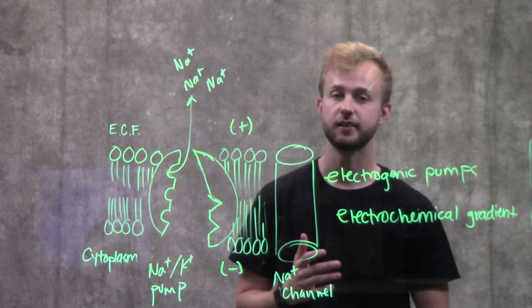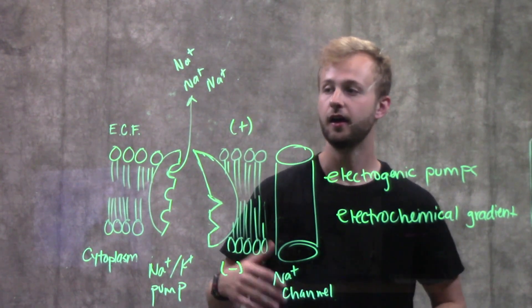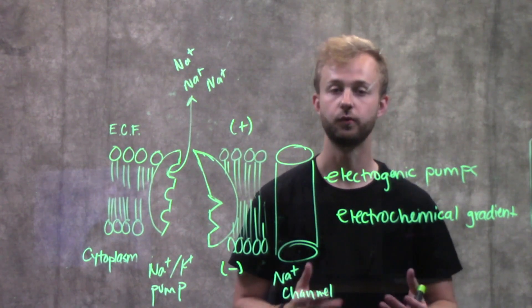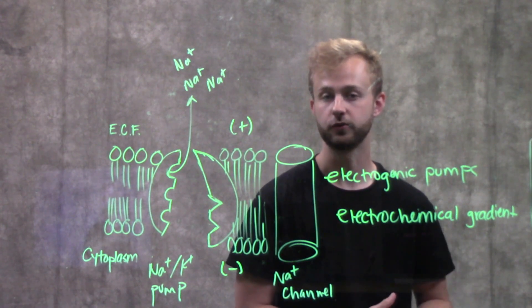Whether that be inside the cell or outside the cell, it doesn't really matter. As long as it's flowing down its concentration gradient and its electrical gradient, then it will be flowing down its electrochemical gradient as well.